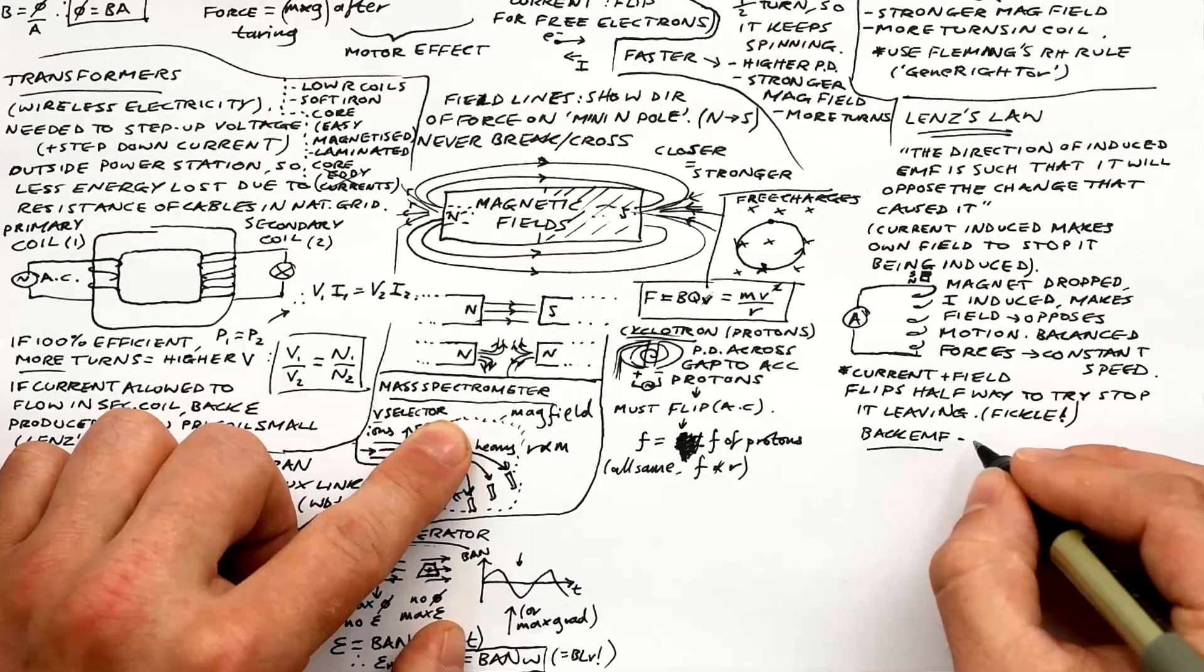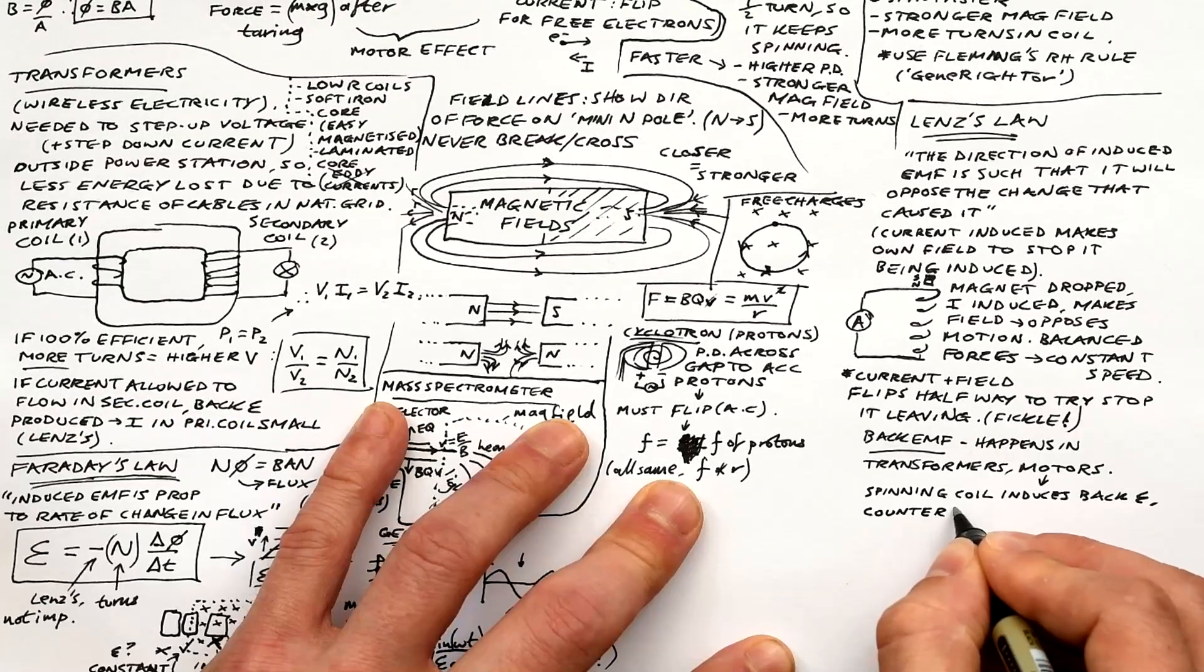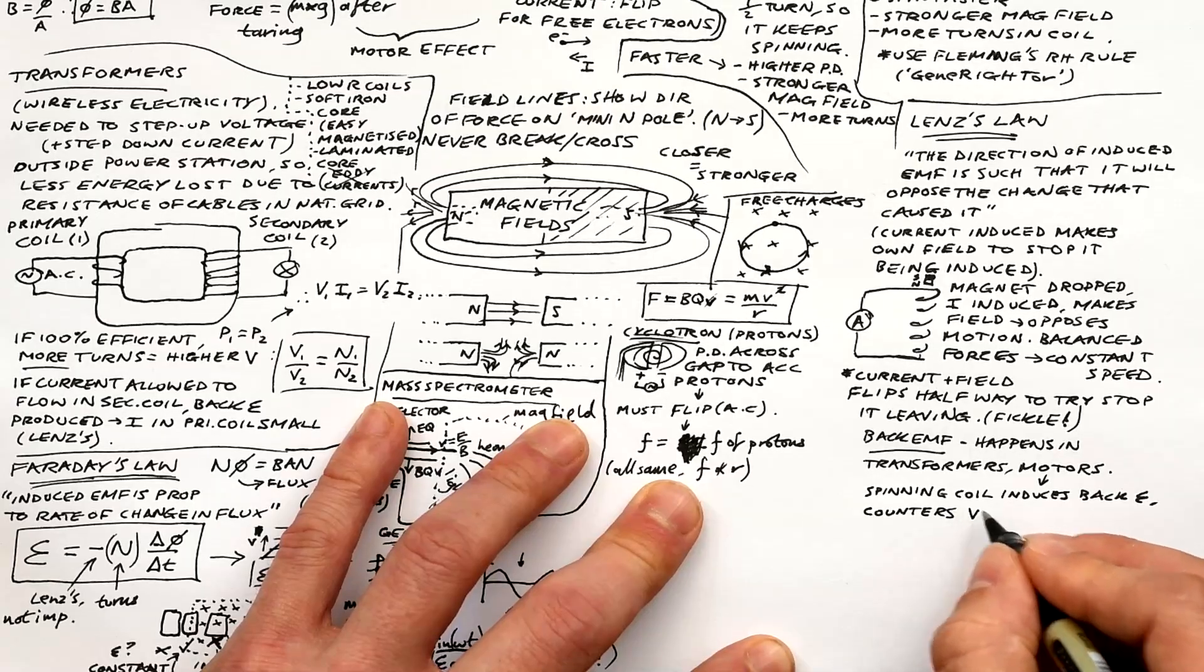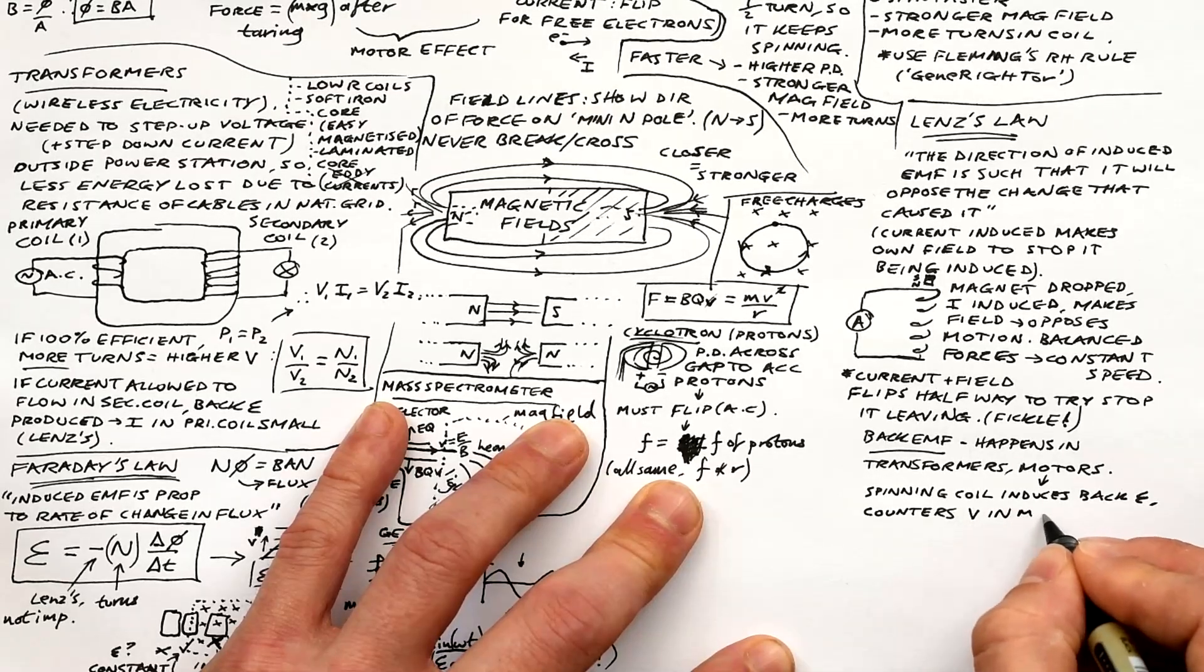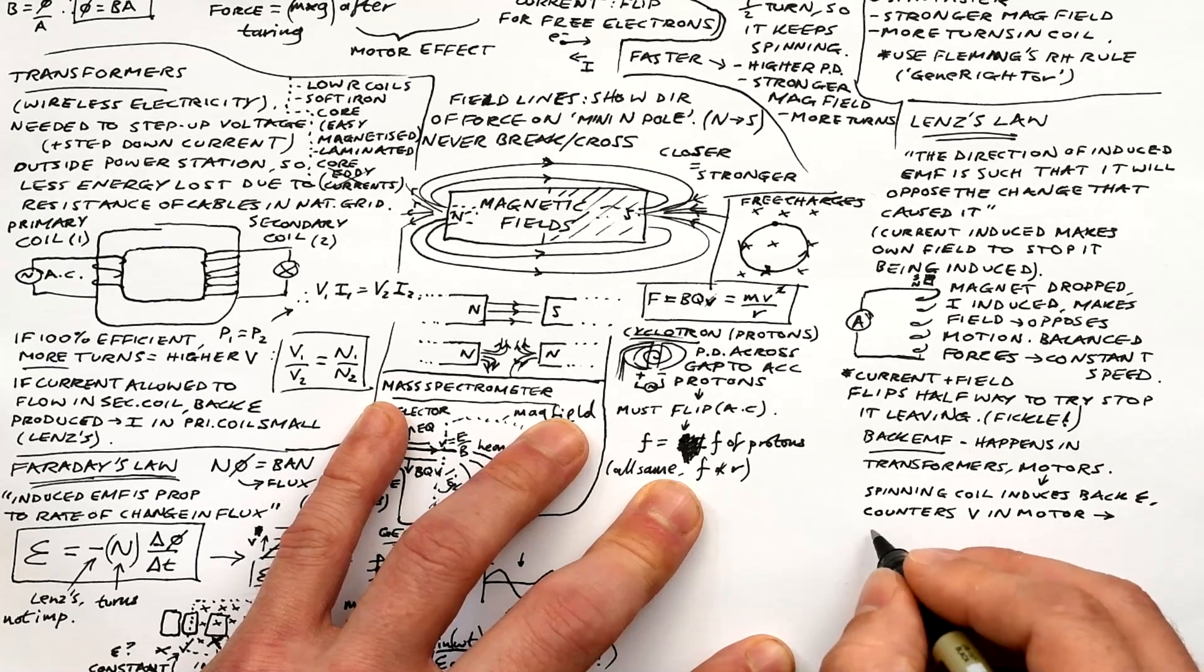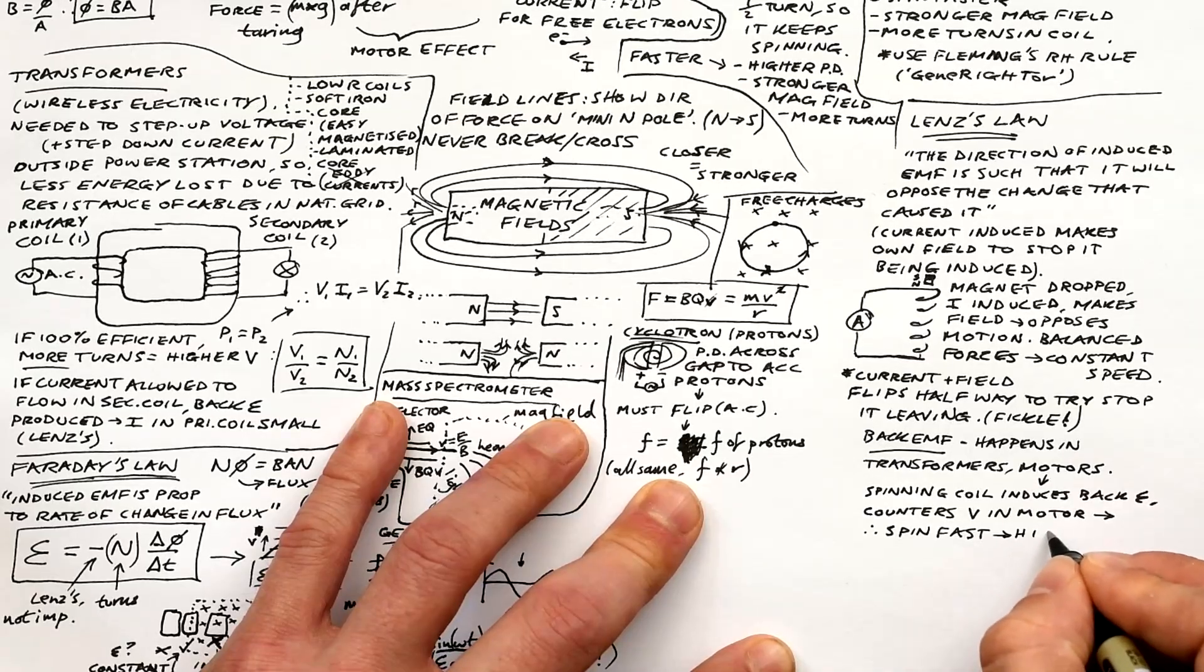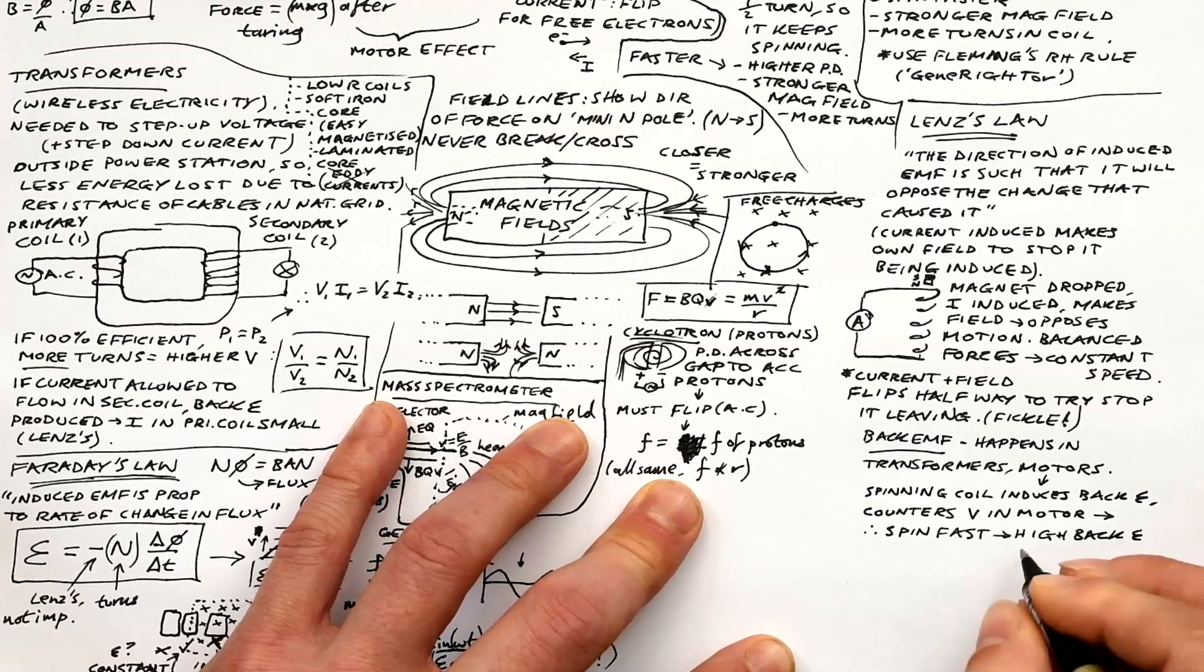Okay, let's go back to Lenz's law. Let's finish off back EMF. This happens in a transformer like we've seen already, but it also happens in motors. When the motor is made to spin, that actually has a bit of dynamo effect as well. And so we have an EMF induced in the coil that's actually trying to battle the voltage that's making the motor spin. It's a good thing because that reduces the current in the coil in the motor.